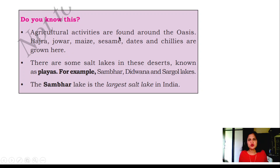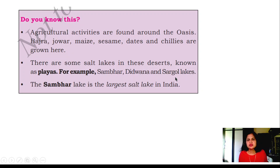Agricultural activities are found around the Oasis. Bajra, Jowar, Maize, Sesame, Dates, and Chillies are grown here. There are some salt lakes in these deserts, known as playas. For example, Sambhar, Didwana, and Sargol lakes. The Sambhar Lake is the largest salt lake in India.